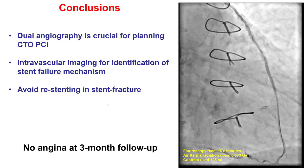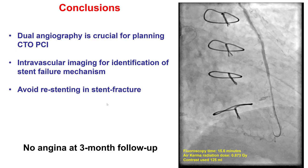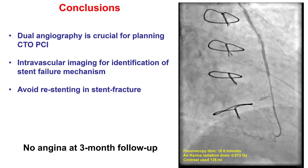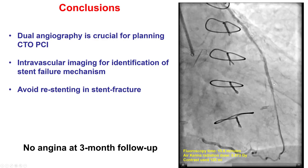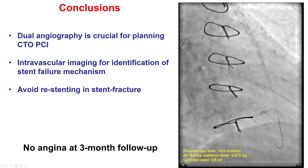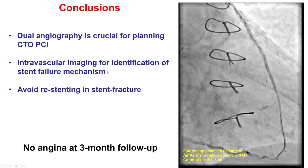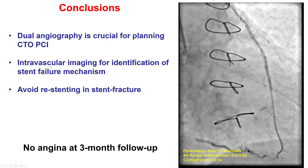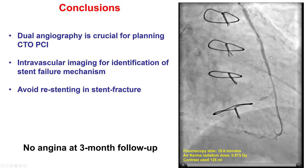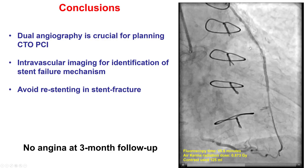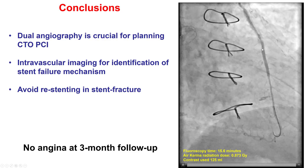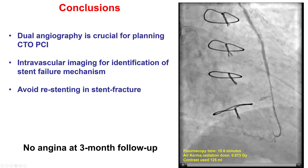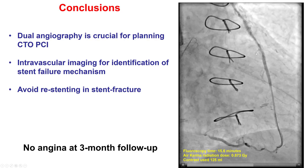What are the lessons from this case? First, dual angiography is critical for understanding the anatomy in CTO-PCI — sometimes the patient may not have a CTO, as was the case here. Second, use intravascular imaging in cases of stent failure, such as in-stent restenosis, to determine the mechanism of failure. In this case it appeared to be stent fracture, likely because of the hinge motion of the Lima distal anastomosis to the LAD. When we have stent fracture, it is best to avoid re-stenting that area because repeat stent fracture may occur.